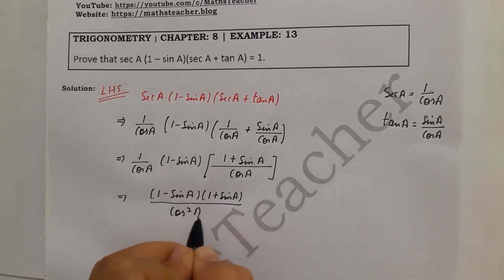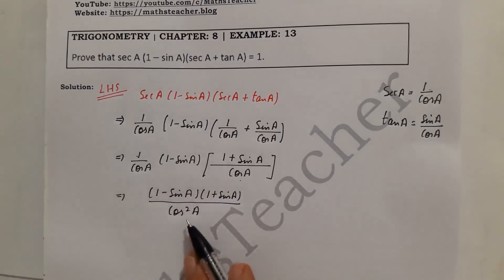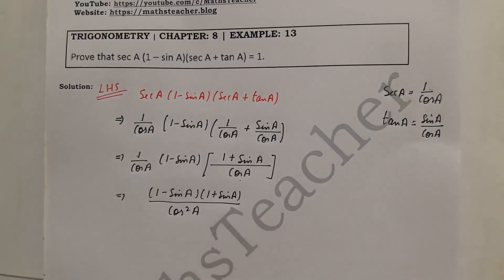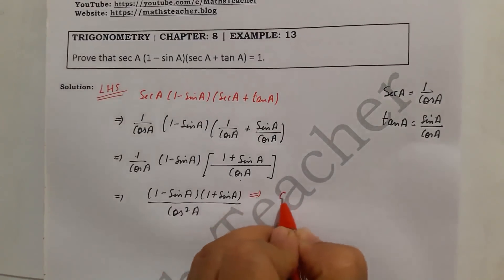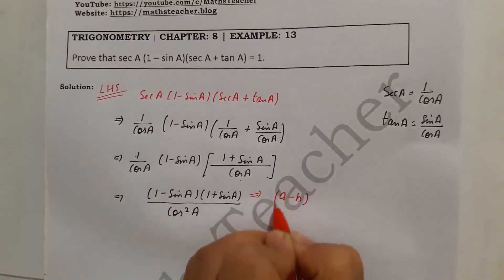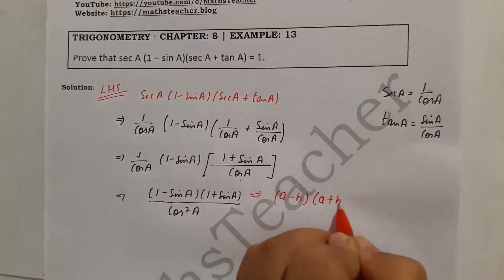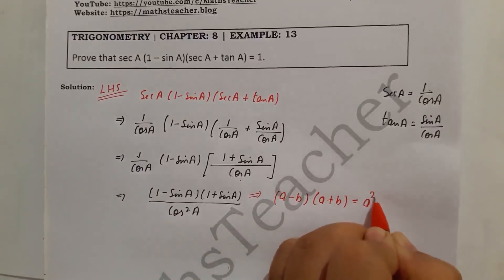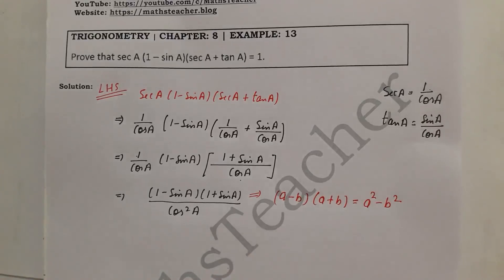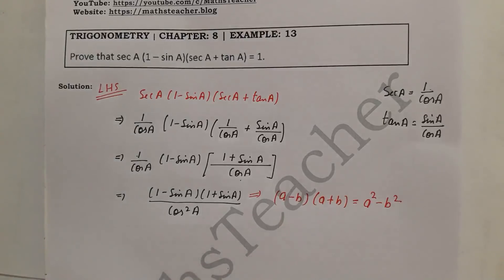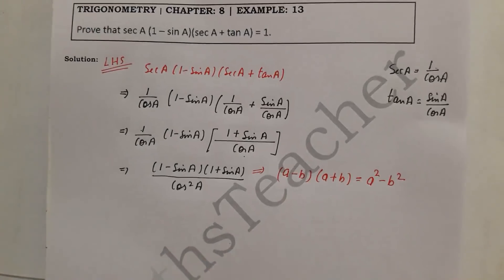Now there is an identity here. We have (1 minus sin a) and (1 plus sin a), which is of the form (a minus b)(a plus b). What is that identity? It equals a squared minus b squared. Keep all basic identities clear in your mind so you can apply them at the right step.